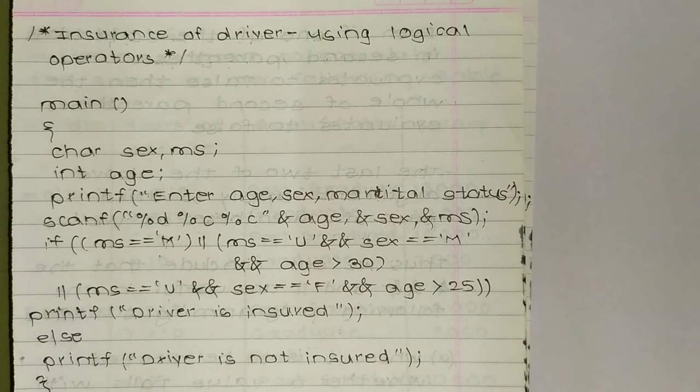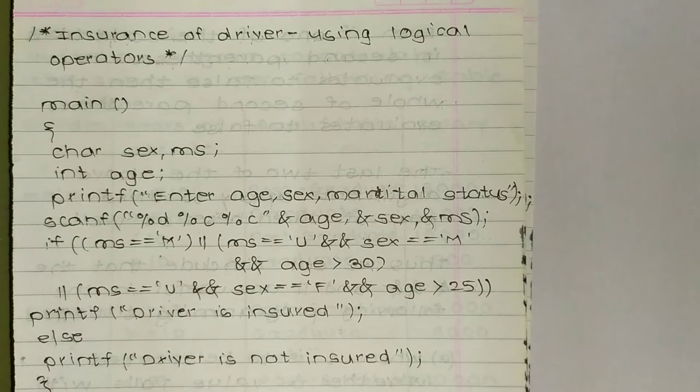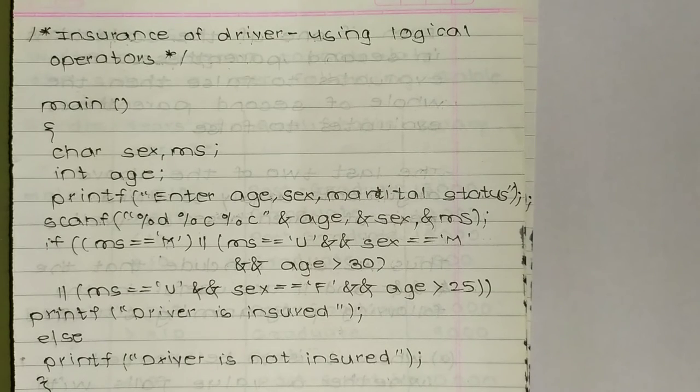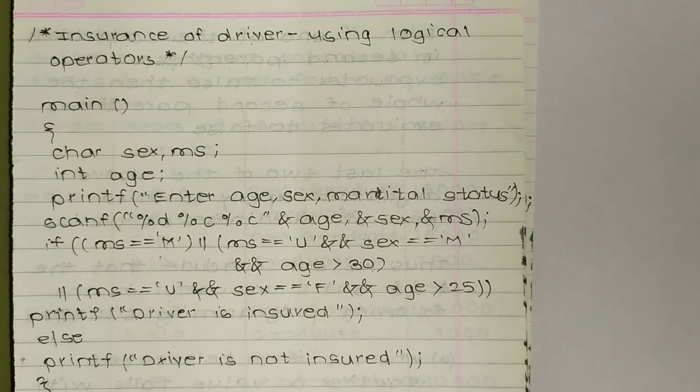So ms, that is character ms, is capital M, then OR - that is logical operator - ms is equal to U, that is unmarried, AND sex is equal to M AND age is more than 30.